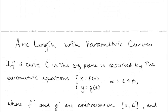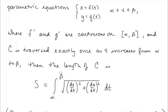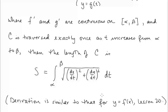Now let's look at arc length with parametric curves. If a curve C is described by x equals f of t, y equals g of t for t from alpha to beta, where f prime and g prime are continuous on the closed interval, and C is traversed exactly once, then the length of C is the integral from alpha to beta of the square root of (dx/dt)² plus (dy/dt)² dt.